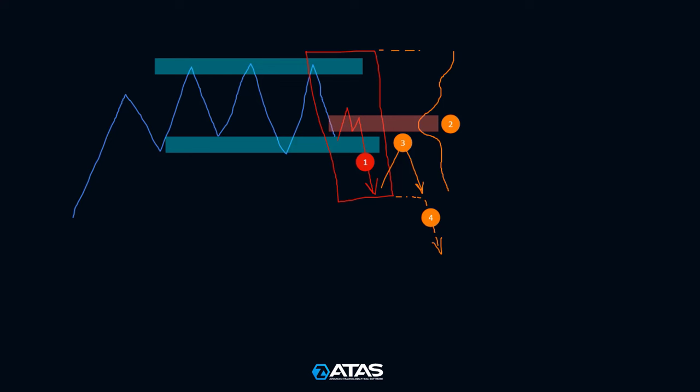Sooner or later the consolidation will be broken. In this example there is a breakdown at point one. At this moment you need to identify the highest volume within the last impulse that triggered the breakdown, highlighted by the red rectangle. Until this volume is broken we won't have signs of a false breakdown, so you can try trading in the direction of the new trend.